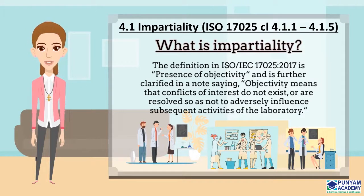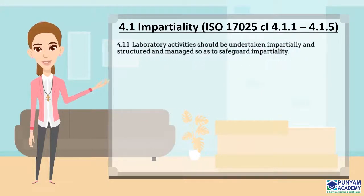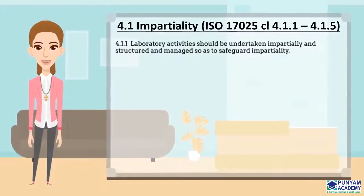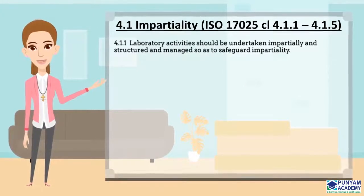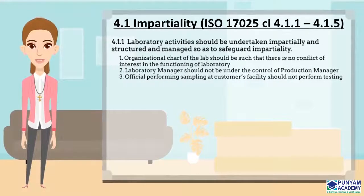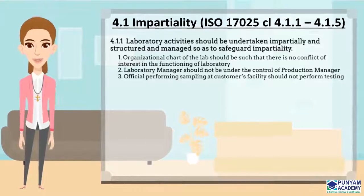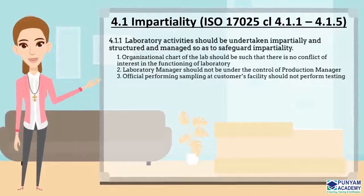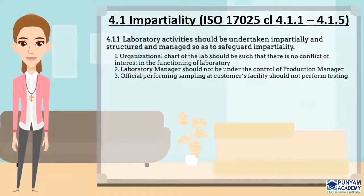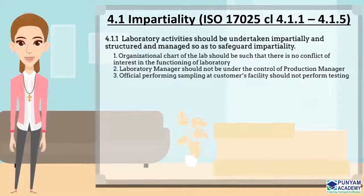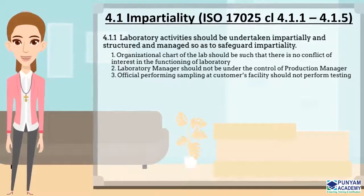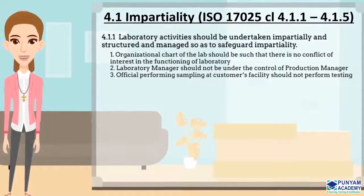Let's now talk about impartiality clause 4.1. The first sub-clause is 4.1.1: laboratory activities should be undertaken impartially and structured and managed so as to safeguard impartiality. This highlights three points: (1) the organization chart of the lab should be such that there is no conflict of interest — technical and administration personnel should be separate; (2) the laboratory manager should not be under the control of the production manager and must be free from any other pressures; (3) officials performing sampling at a customer's facility should not perform testing — sampling and testing should be performed by different officials.